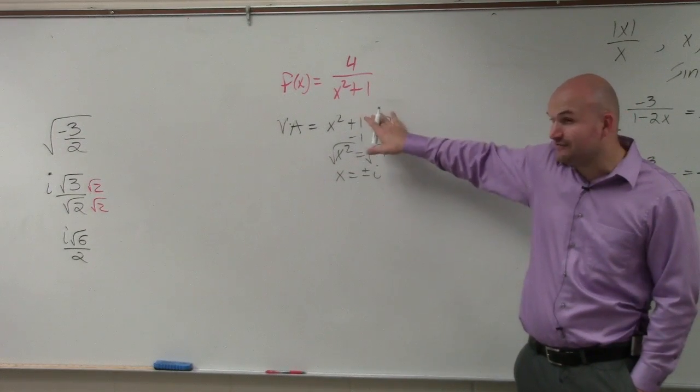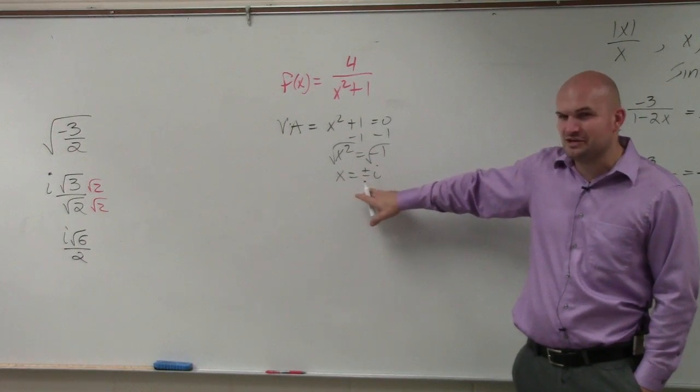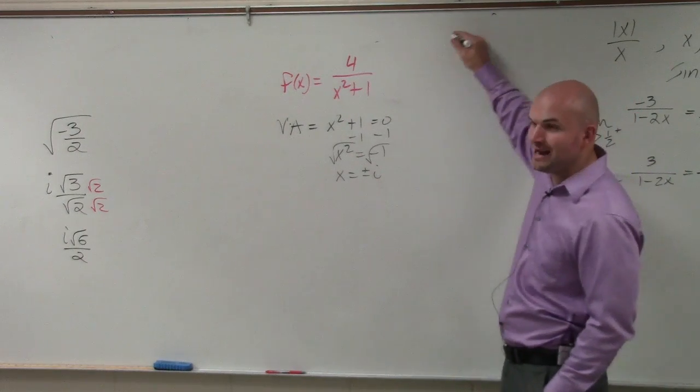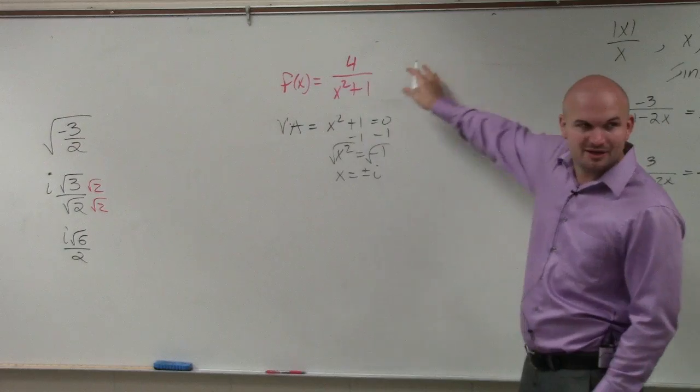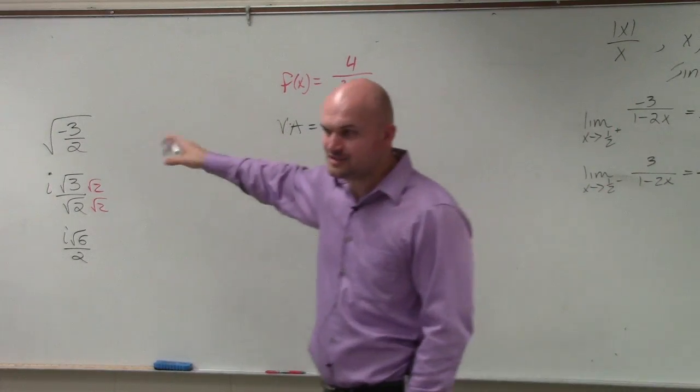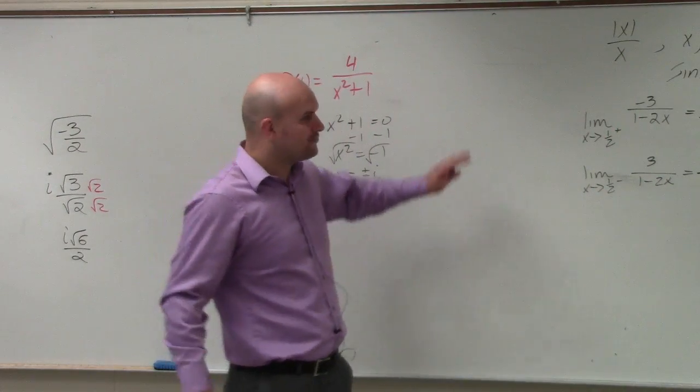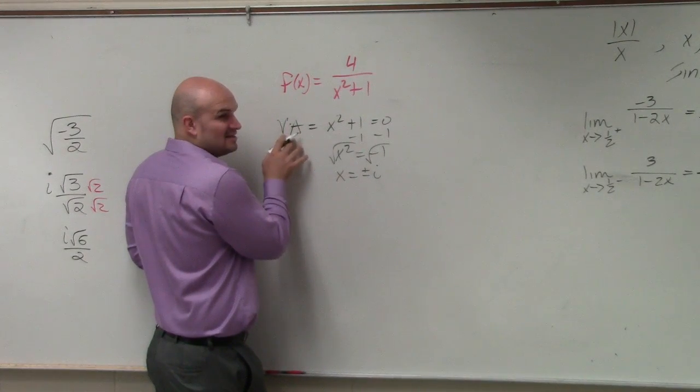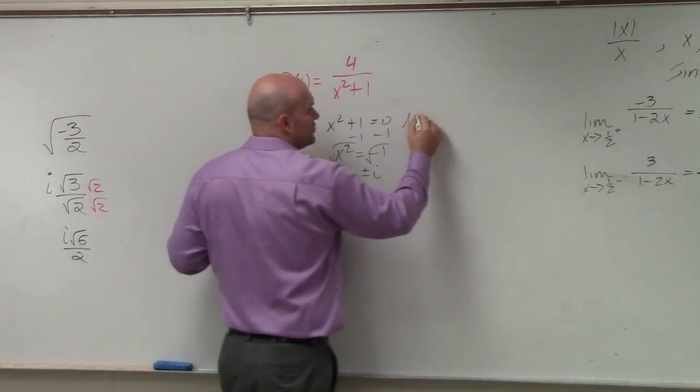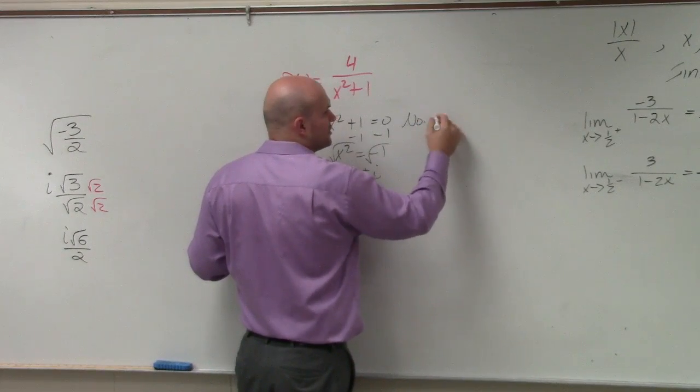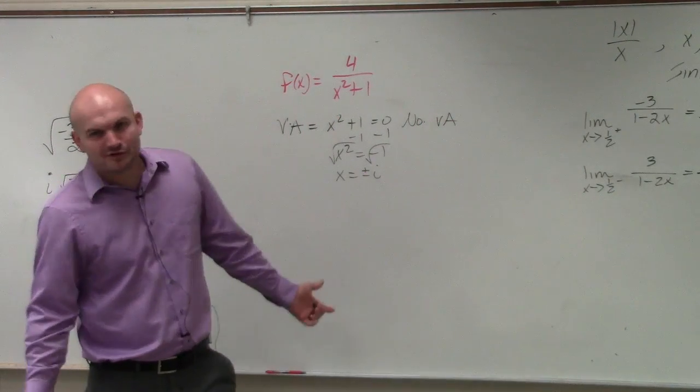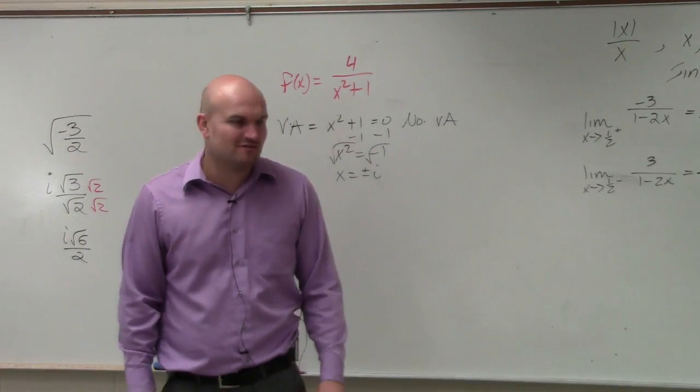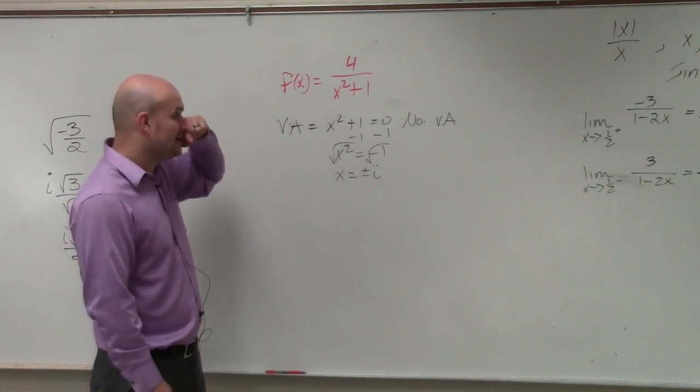So this function is undefined when we're plugging in imaginary numbers. We don't care if we're plugging in imaginary numbers. We don't even graph imaginary numbers on the same grid as real numbers. So we're only going to care about real numbers. So since it's only imaginary numbers that makes this undefined, there are no real vertical asymptotes. There's imaginary vertical asymptotes, but do we really care about having imaginary vertical asymptotes? No. So there's only going to be none.